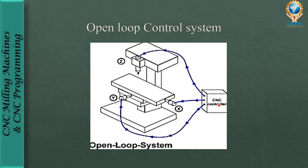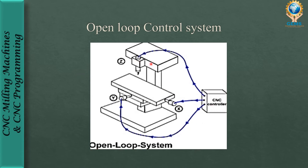In the open loop control system diagram, the CNC controller handles three types of slides: the spindle on the Z-axis, the table on the X-axis, and the slide on the Y-axis. The CNC controller only sends information to these slides but does not receive feedback on whether they reached the desired position or distance. It is like a one-way journey — only the input signal is sent to the system.